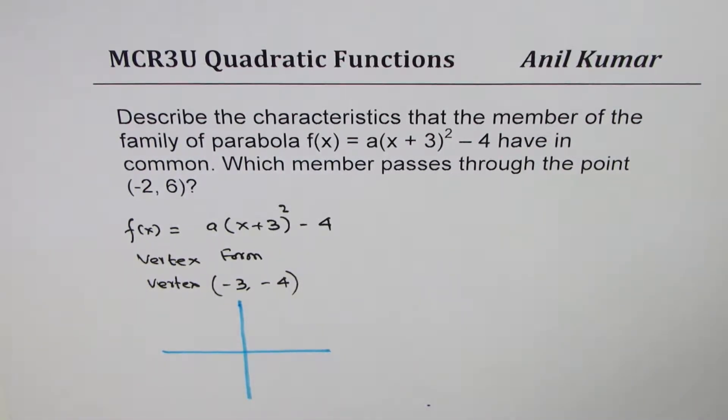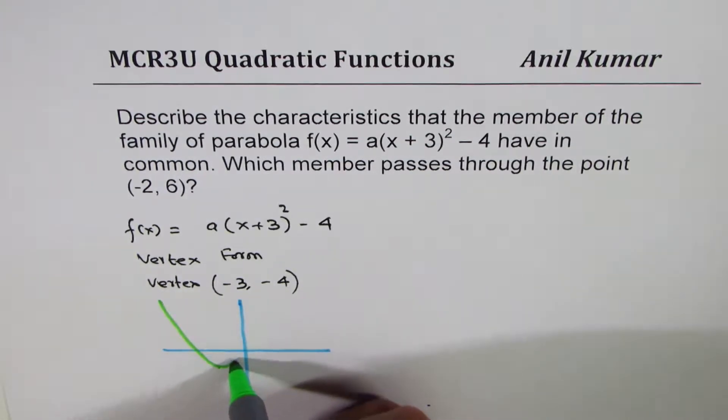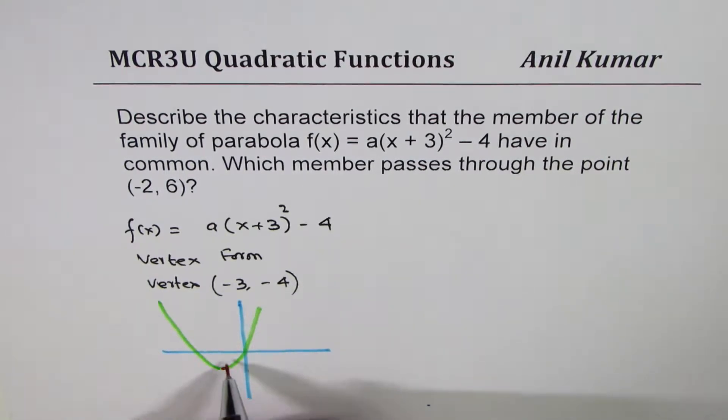So when we say that the vertex is at (-3, -4), say, minus 3 and minus 4 is somewhere here, then the parabola could be something like this, for example, where this point is at x value of -3 and y value of -4.